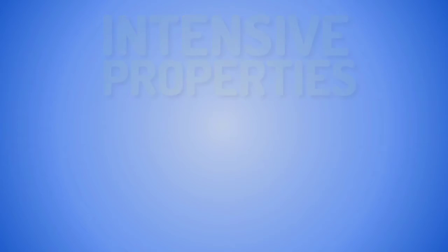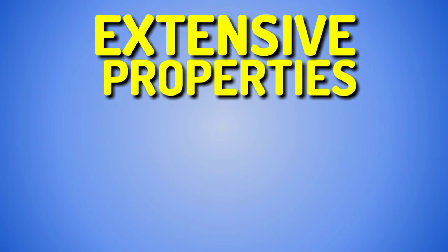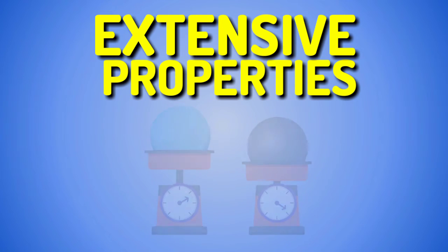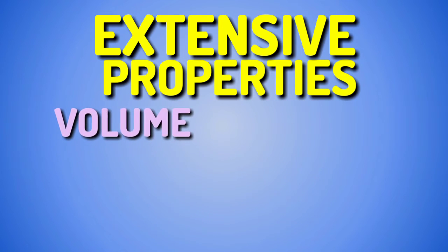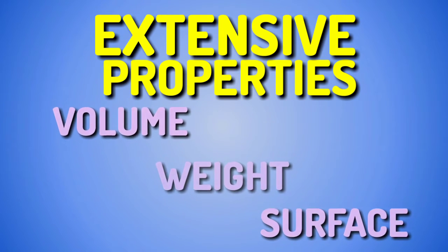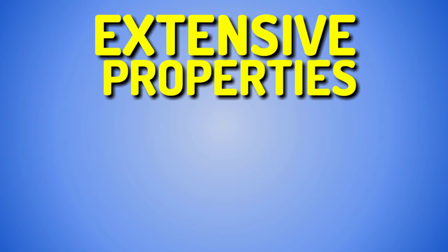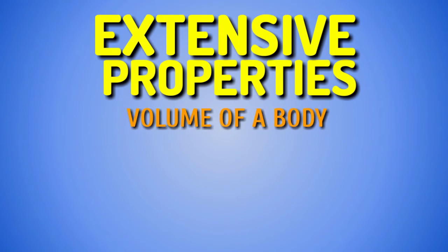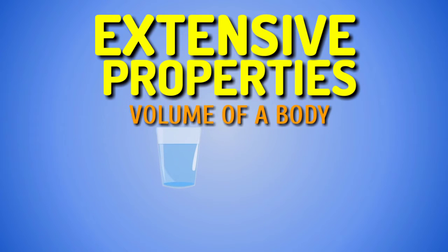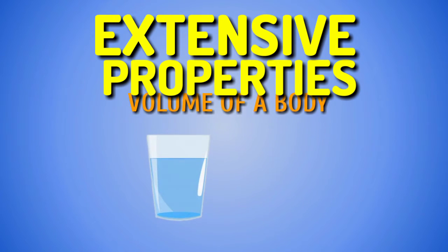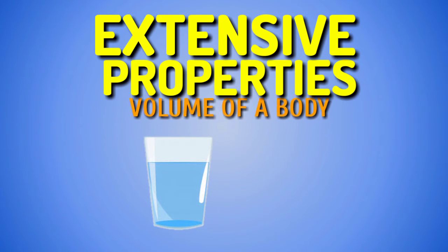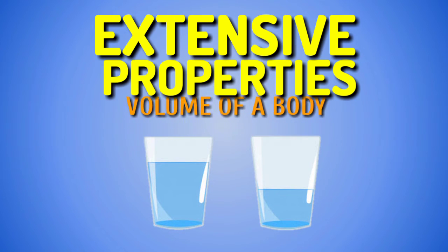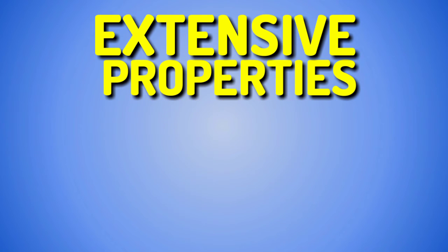On the contrary, the extensive properties depend on the mass that is available, as is the case of volume, weight, surface, etc. For example, when we talk about the volume of a body, we will see that it varies depending on whether it has more or less mass. Two liters of water will have more mass than half a liter and therefore more volume.